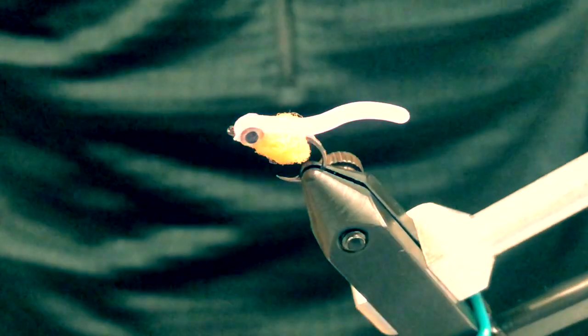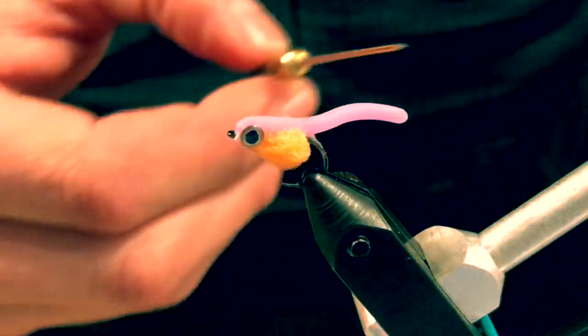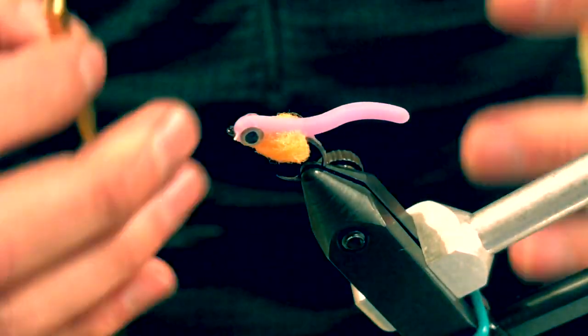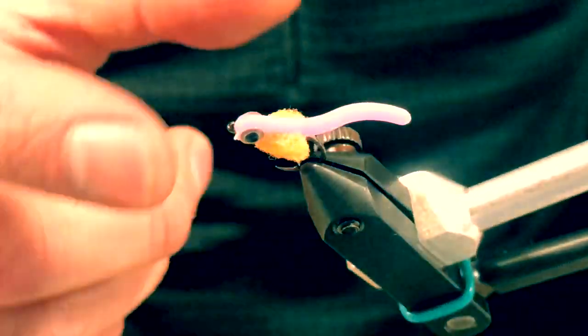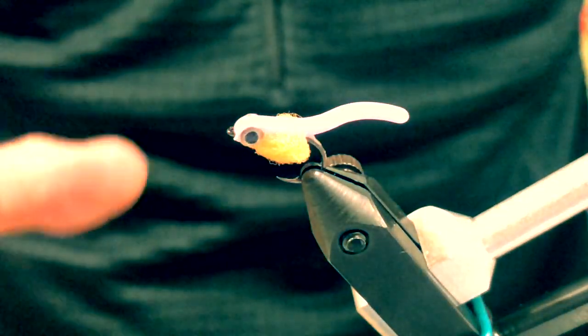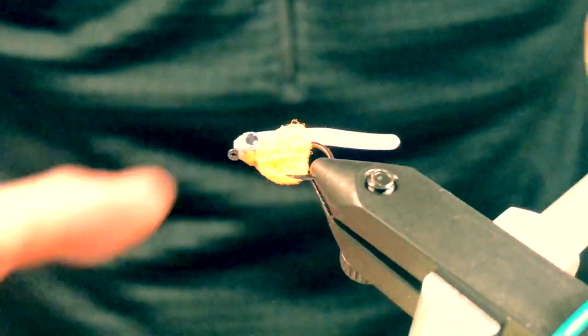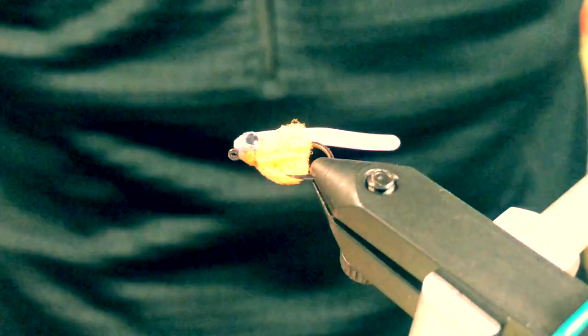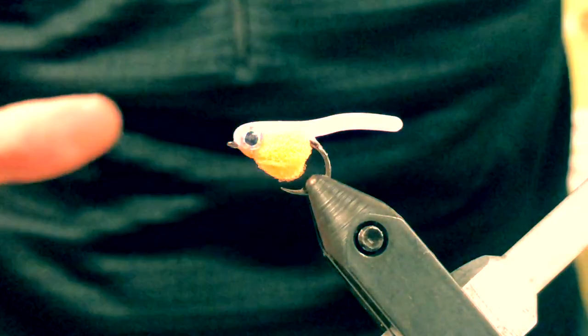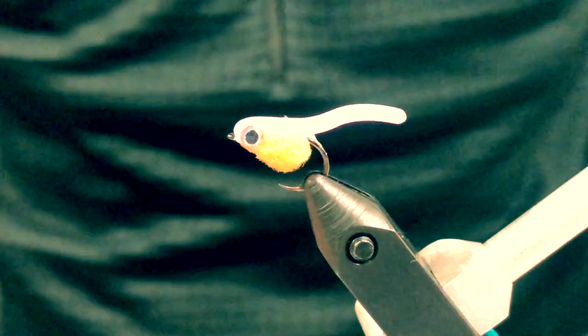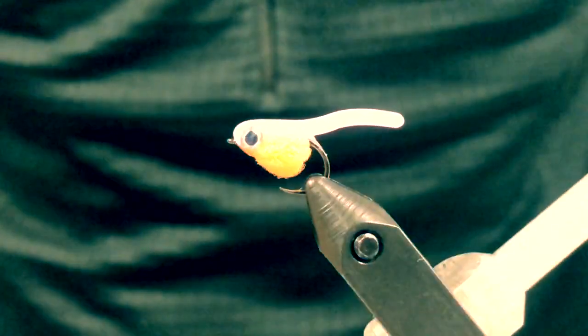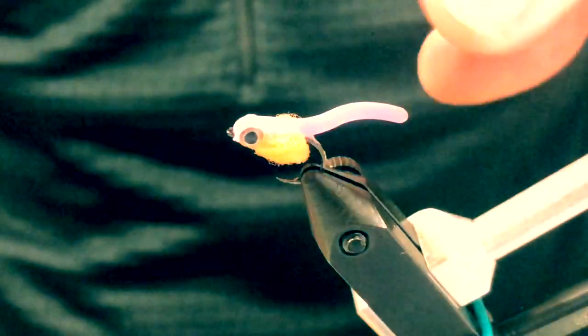These little alevin will use that yolk sac as a food source. They live kind of in the gravel and the soft edges in the rivers, and occasionally they'll get dislodged, especially in high water, and they kind of suspend and float downstream almost like a nymph.